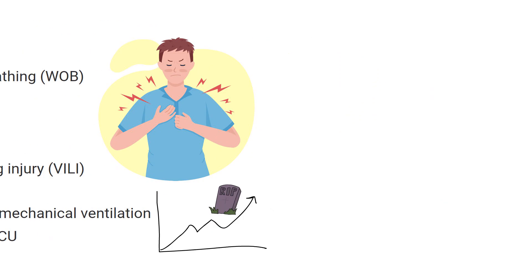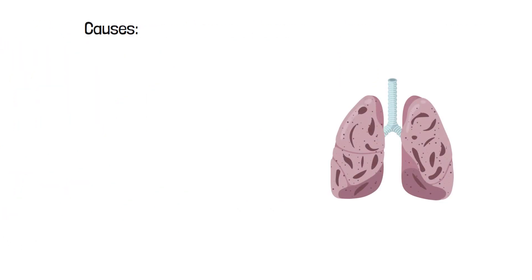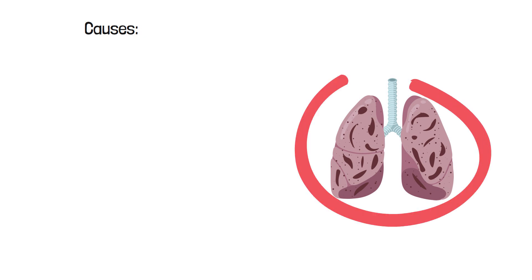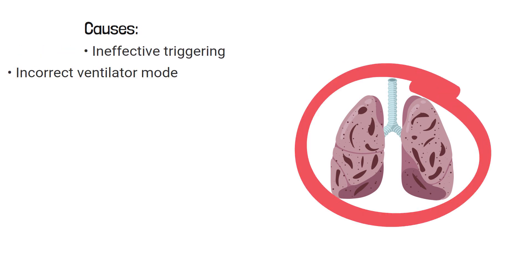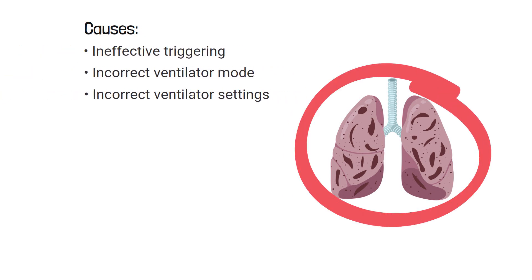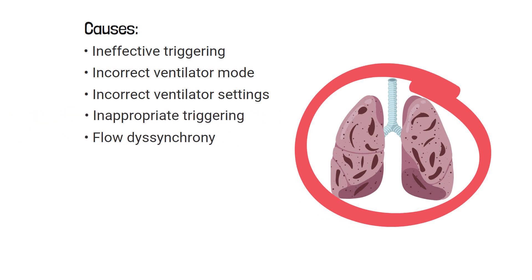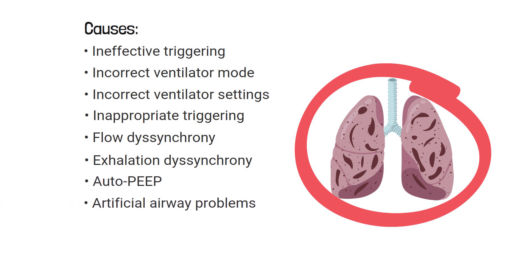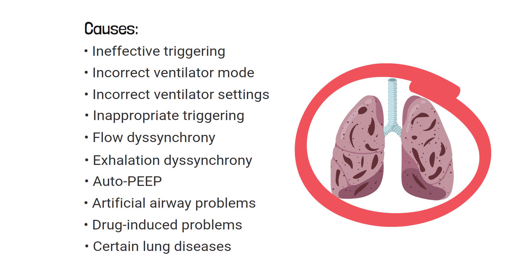Some examples of common causes of ventilator dyssynchrony include ineffective triggering, incorrect ventilator mode, incorrect ventilator settings, inappropriate triggering, flow dyssynchrony, exhalation dyssynchrony, auto-PEEP, artificial airway problems, drug-induced problems, and certain lung diseases. Dyssynchrony can occur due to several other causes as well — these are just a few of the most common examples.